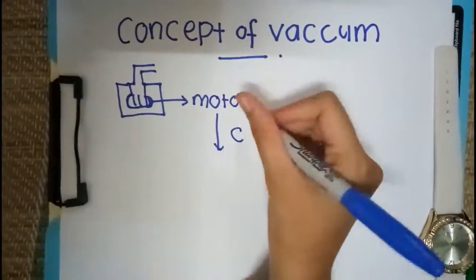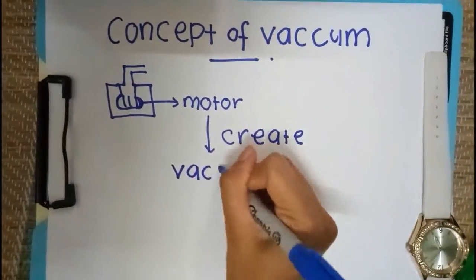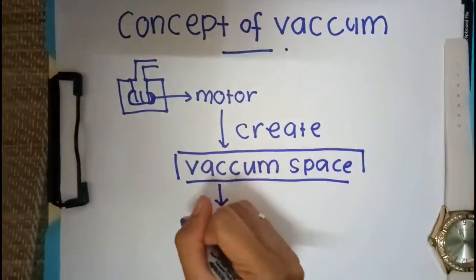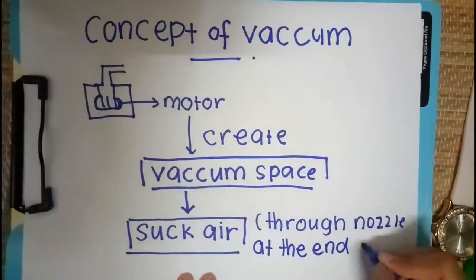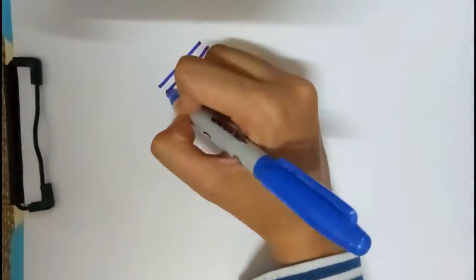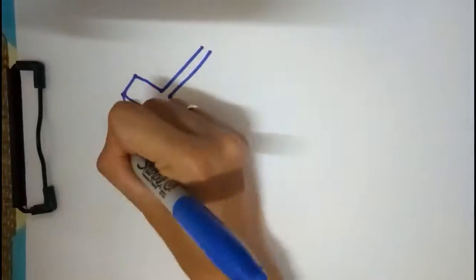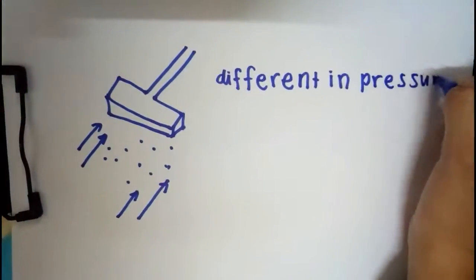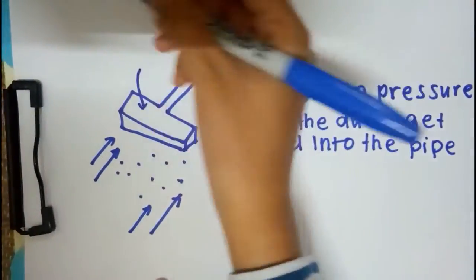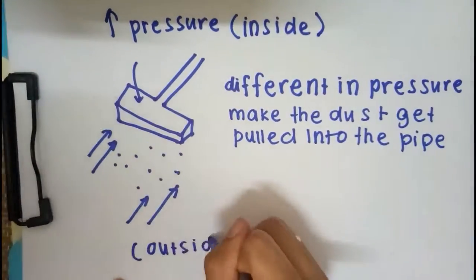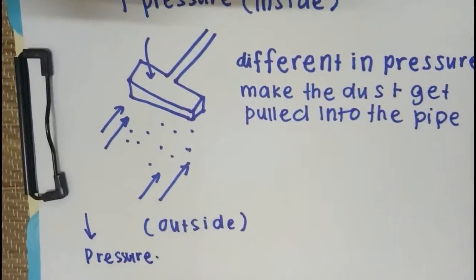Now I'm going to explain about how this vacuum can function. The vacuum has a component like a motor. The motor will create a vacuum space and suck air through the nozzle at the end of the pipe, so the dust from the outside will go to the inside. This happens because there is a pressure difference outside and inside the vacuum — the pressure outside is lower than inside, so the dust will come in.